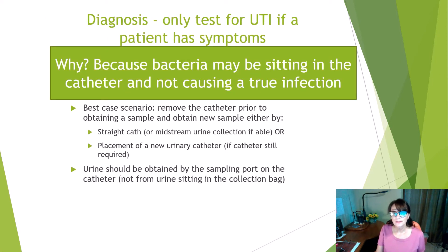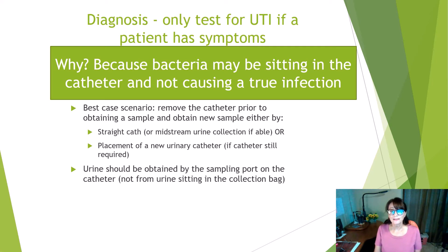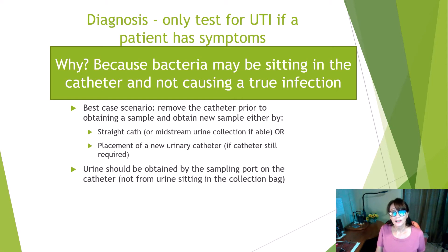For diagnosis of a CAUTI, only test for UTI if you have symptoms, because bacteria may be sitting in the catheter and not causing true infection. The best-case scenario is to remove the catheter prior to obtaining a urinary sample to eliminate bacteria just sitting on the catheter. You can obtain a new specimen by straight catheterization, midstream collection, or by placing a new urinary catheter if one is still required. Make sure the urine sample is obtained from a sampling port, not from urine sitting in the drainage bag.